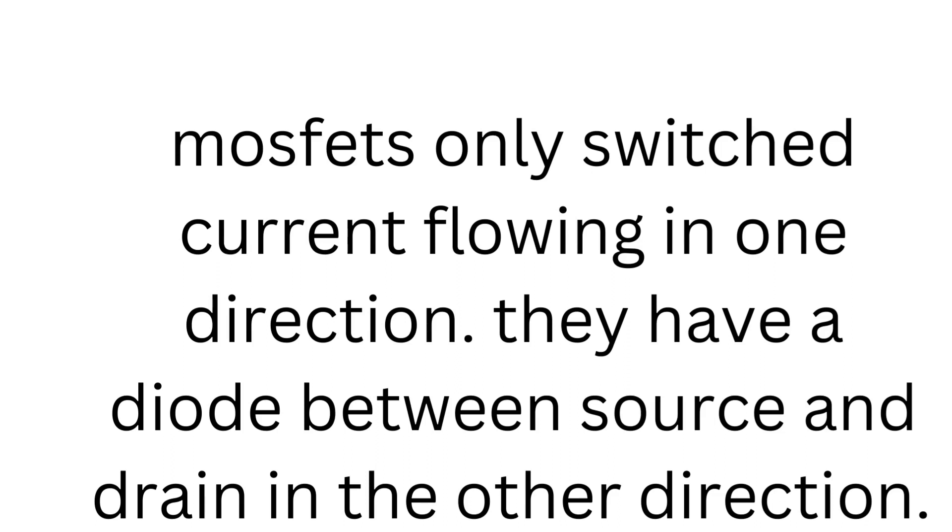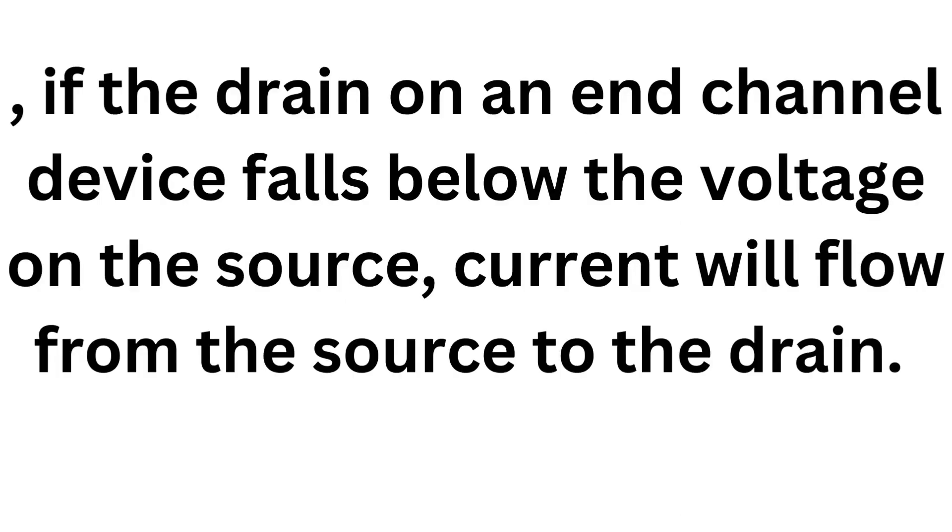MOSFETs only switch current flowing in one direction. They have a diode between source and drain in the other direction. In other words, if the drain on an N-channel device falls below the voltage on the source, current will flow from the source to the drain.